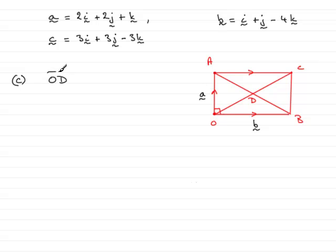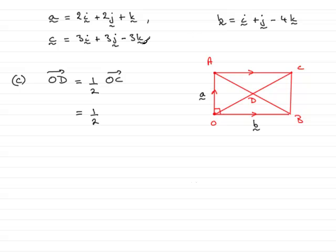O to D is clearly going to be half O to C, so we've just got half the vector O to C. So all we've got to do then is just do half of the vector O to C, and we've got C here, so that is 3i plus 3j minus 3k.